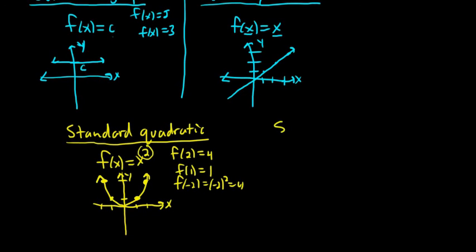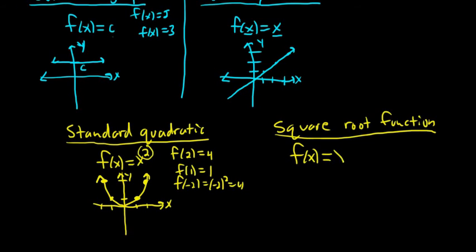Then you have what's called the square root function. This one's super important. So f of x equals the square root of x. That's the y-axis. That's the x-axis. And this one looks like that. It goes up forever, really slowly.